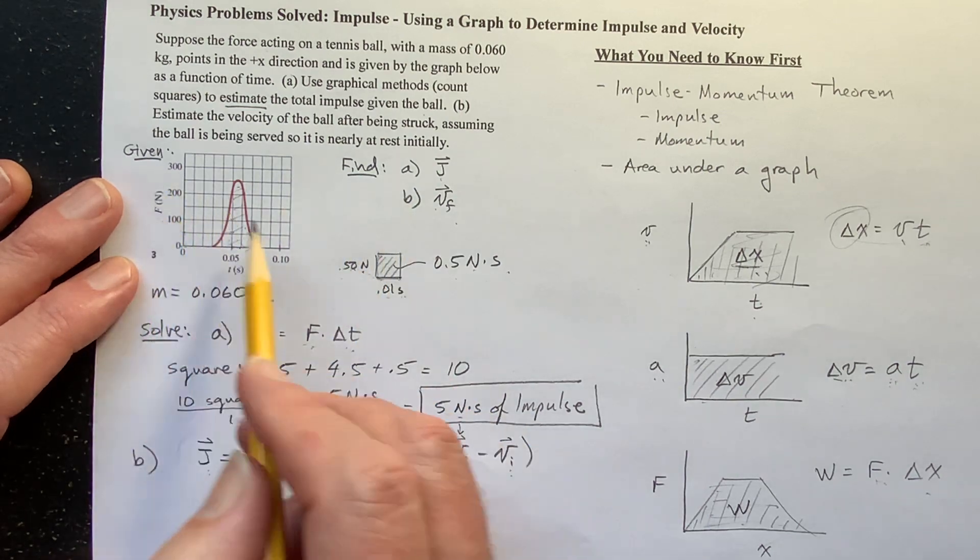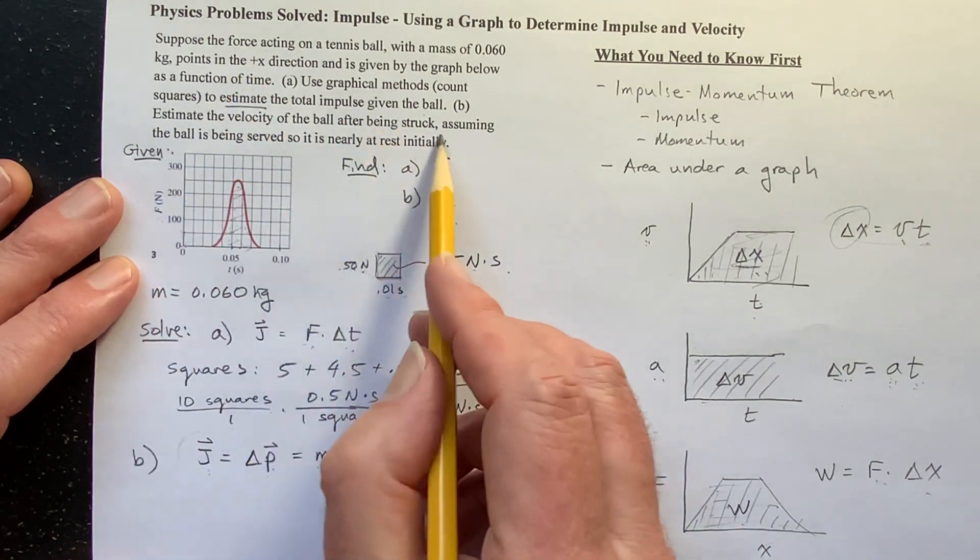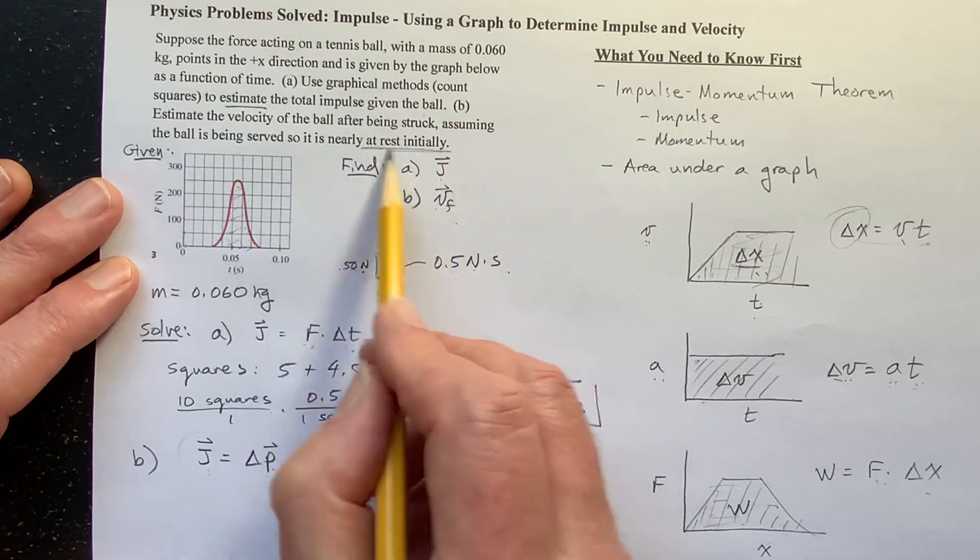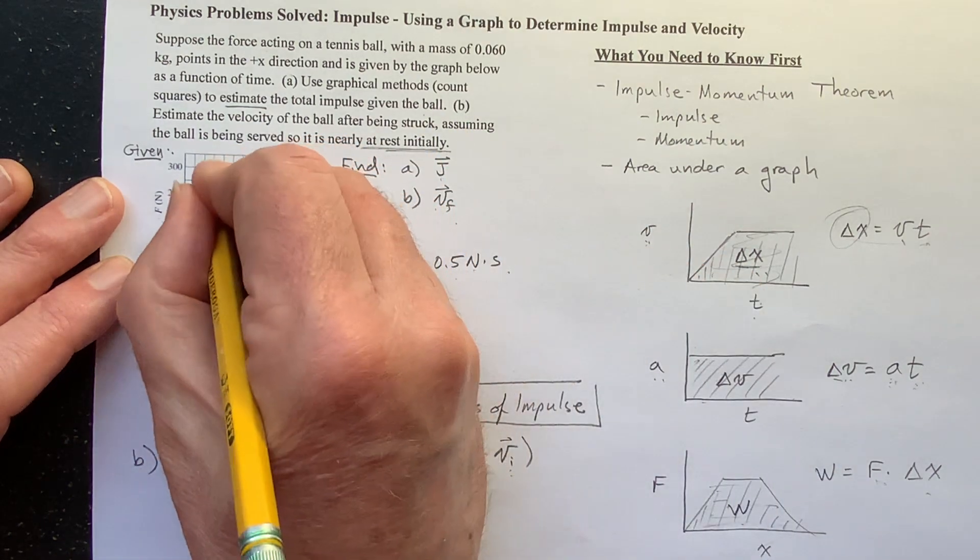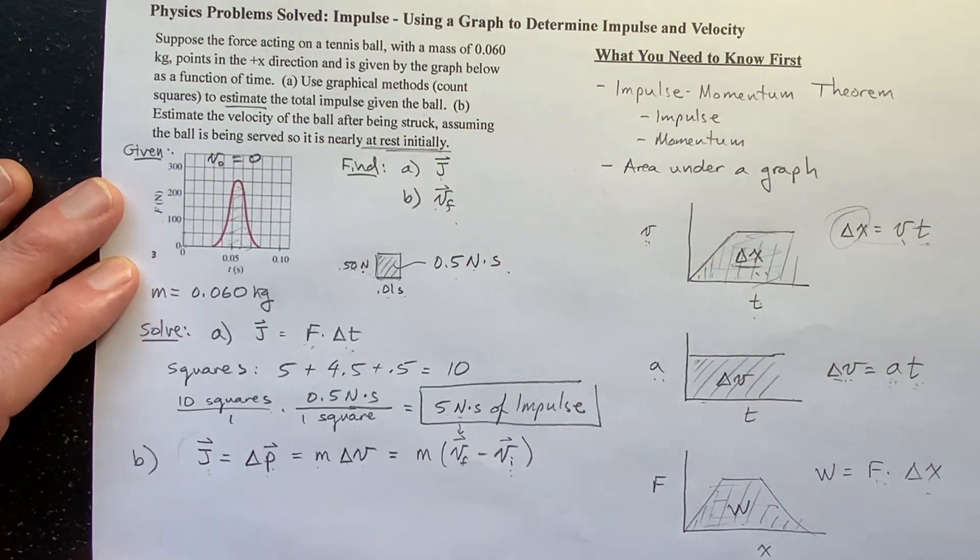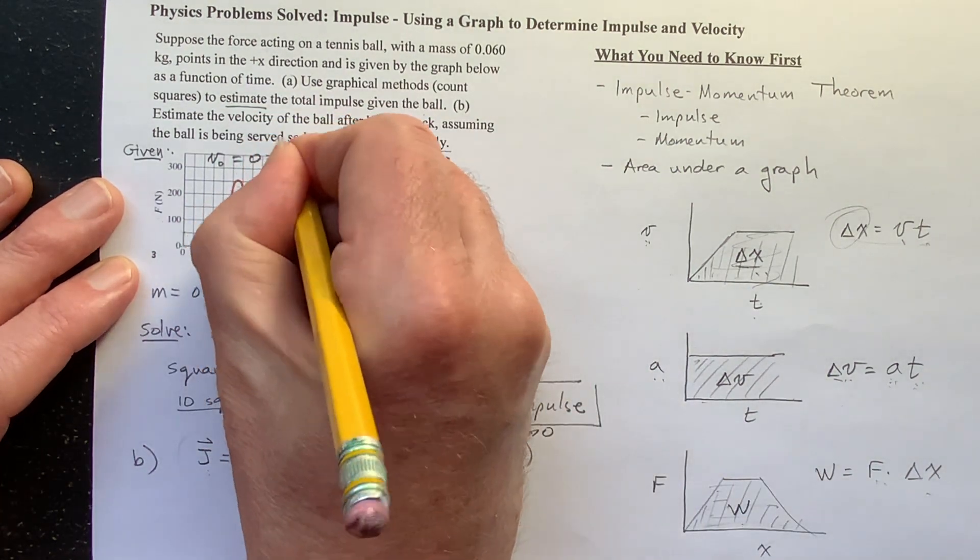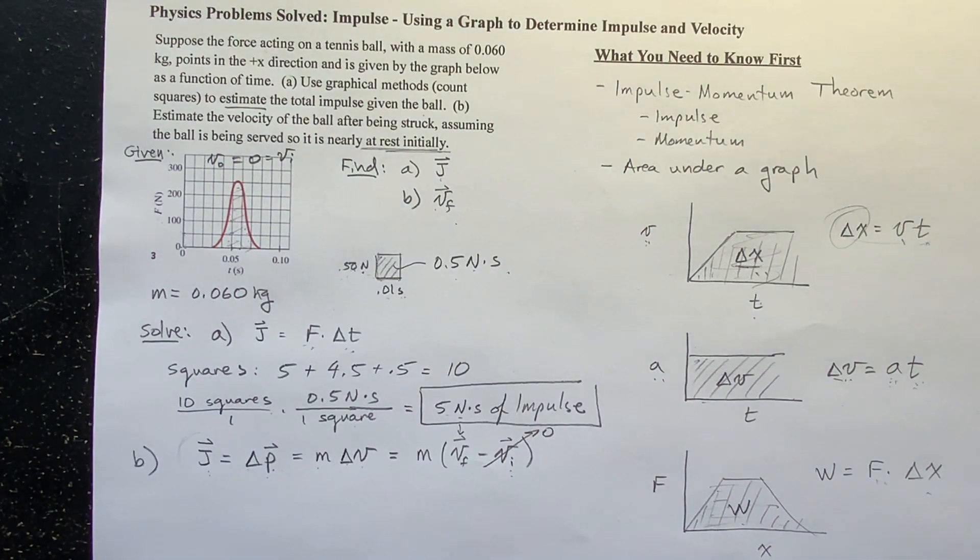And do I know the initial velocity? Oh, yeah, I didn't write it down in here. But it said, assuming the ball is served, so it is nearly at rest initially. So we're going to say V naught equals zero. So initial velocity is equal to zero.